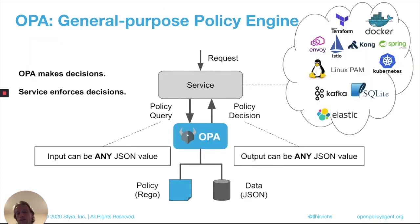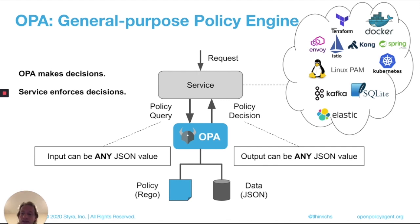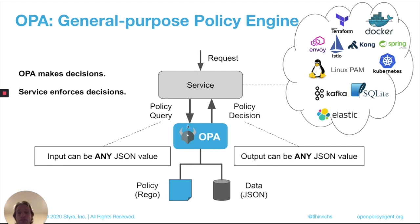OPA is what we like to call a general purpose policy engine. Its mission in life is to make authorization and more generally policy decisions — it's not responsible for enforcing them, that's another piece of software's responsibility. The way this works is the service decides it needs an authorization decision, sends a policy query over to OPA, OPA makes a decision and returns that decision, and then the service goes ahead and does the enforcement.